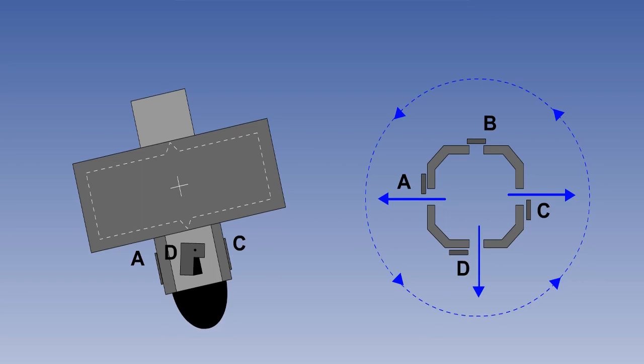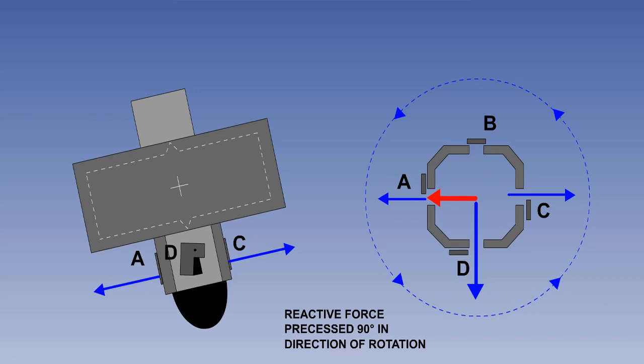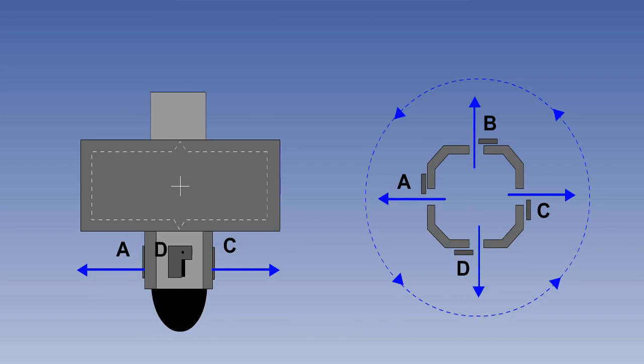In our illustration, the gyro rotor is toppling: vane B has closed while vane D has fully opened. The result is that the air pressure escaping through the opposing port D will no longer be balanced, and the excess reactive force is precessed through 90 degrees in the direction of rotation of the rotor to re-erect the gyro. It is usual for air-driven gyros to rotate in an anti-clockwise direction when viewed from above. These gyros are known as classic gyros.